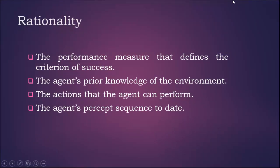How do we define rationality with respect to an intelligent agent? Agent rationality can be defined by the following factors: the performance measure that defines the criterion of success, the agent's prior knowledge of the environment, the actions that the agent can perform, and the agent's percept sequence to date.